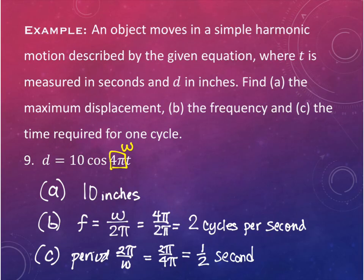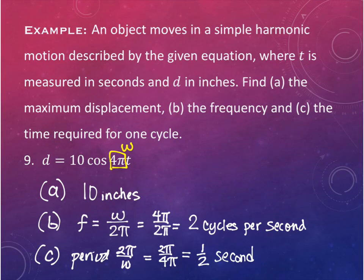Part C again: the period is always 2π over ω. Omega is 4π, so 2π/4π - the pi's cancel, and 2/4 reduces to 1/2. The period is 1/2 second, meaning one full cycle of this motion takes half a second.